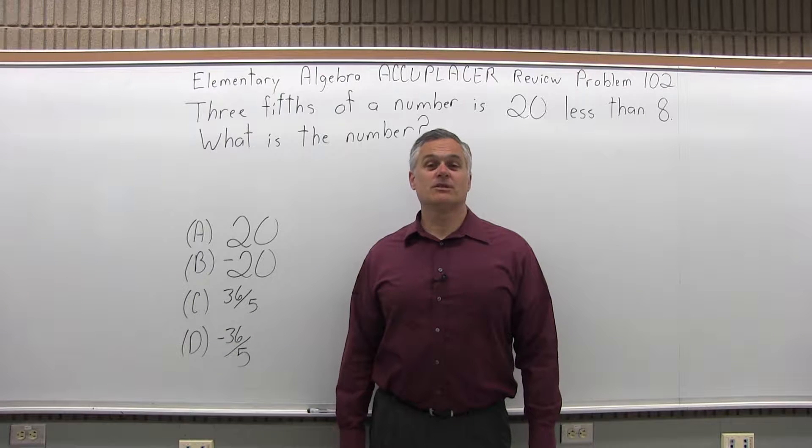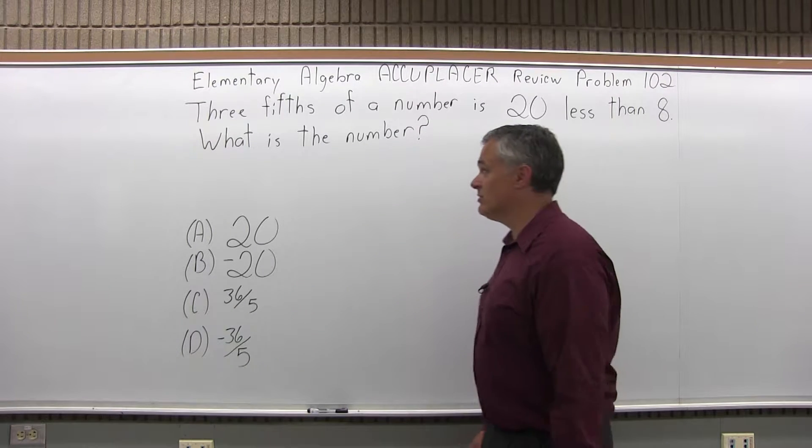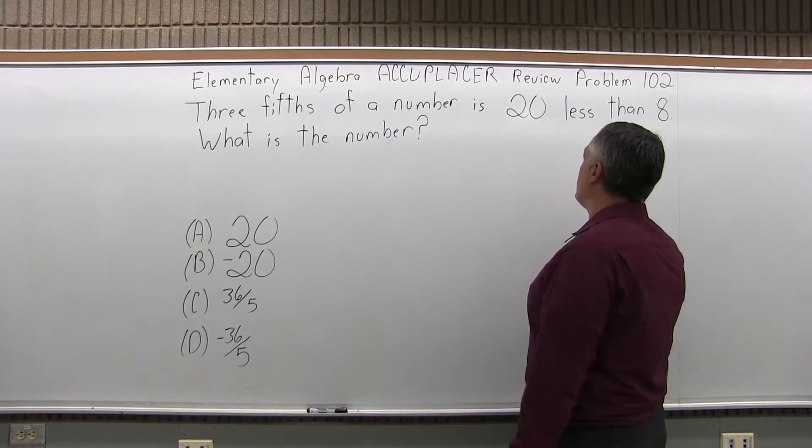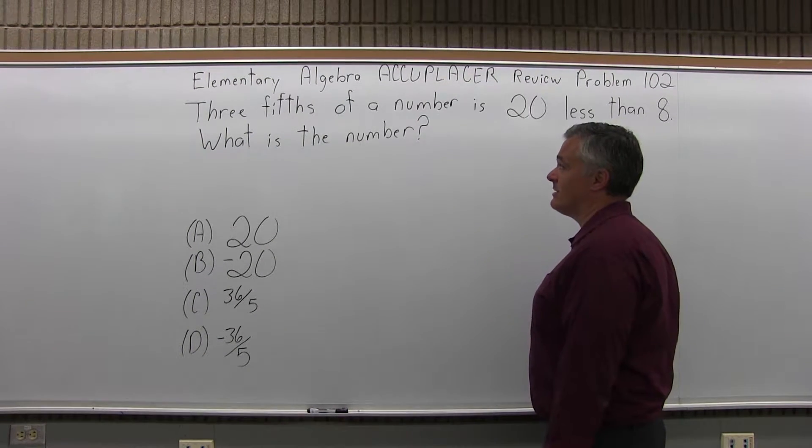This is the Elementary Algebra Accuplacer Review, Problem 102. It says three-fifths of a number is 20 less than 8. What is the number?